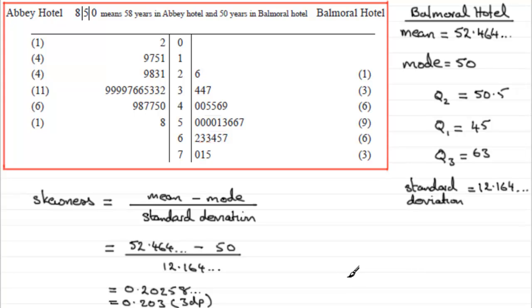Which means that we can expect this distribution to have a tail in the positive sense. So for the Balmoral distribution, we can expect something like this, with it up like that and then just going off like that. Almost symmetrical, but just slightly more values towards the positive sense.